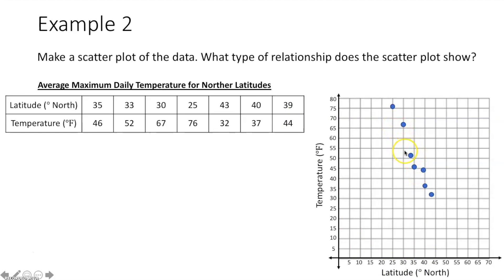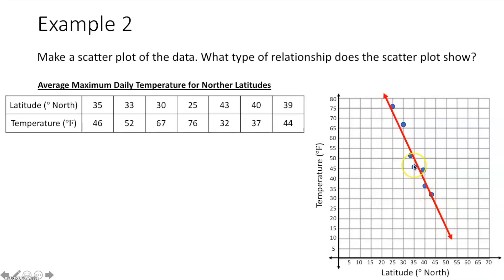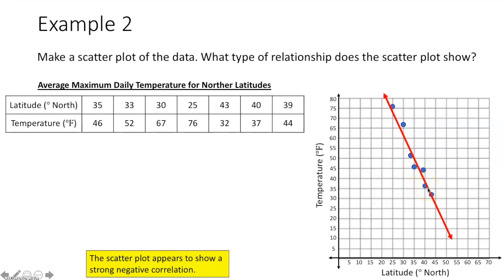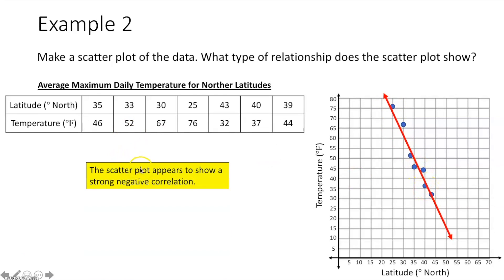Now it's time to ask: what type of relationship does the scatter plot show? Are the points going up and to the right or down and to the right? They're clearly going down and to the right, so it's a negative correlation. Is it perfect, strong, or weak? If I draw a line of best fit through this data, the points are not in a straight line — it's not perfect — but they're pretty close to a line, so this is a strong negative correlation.